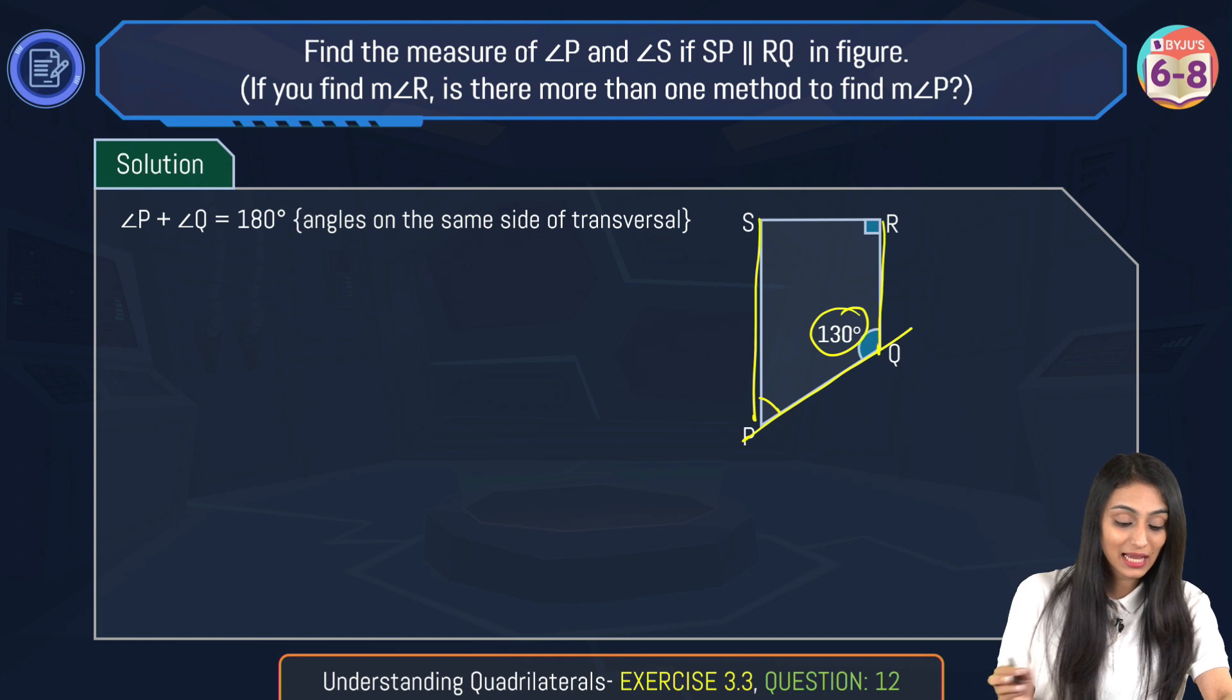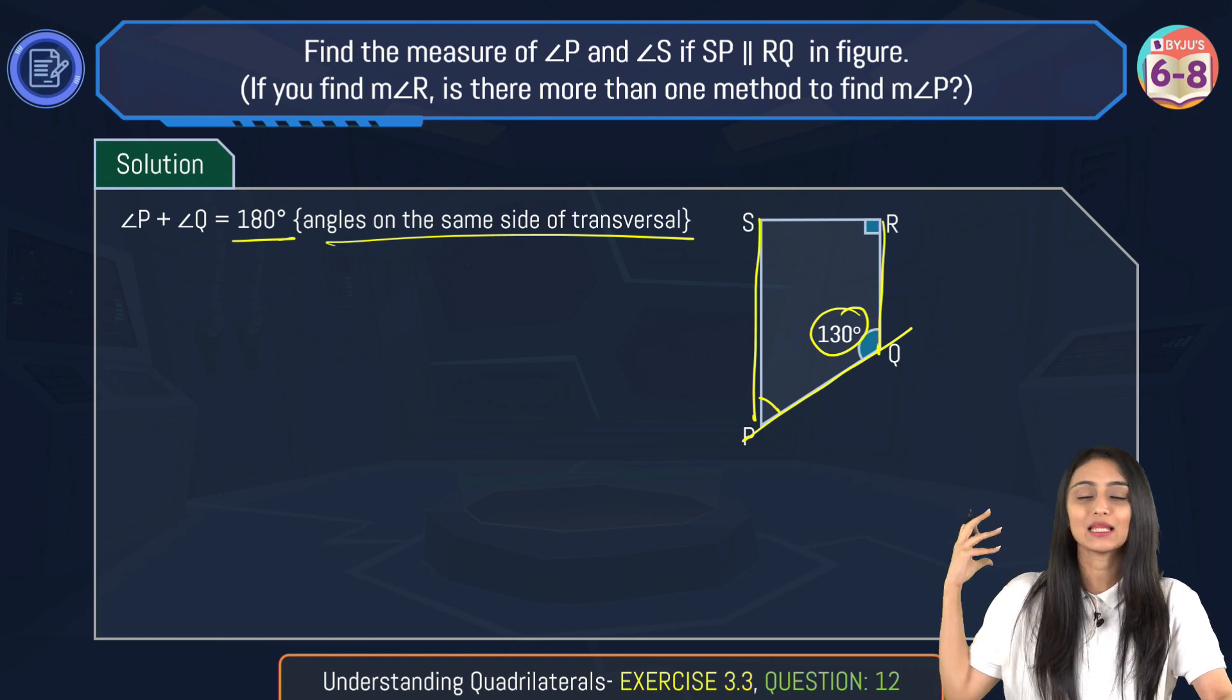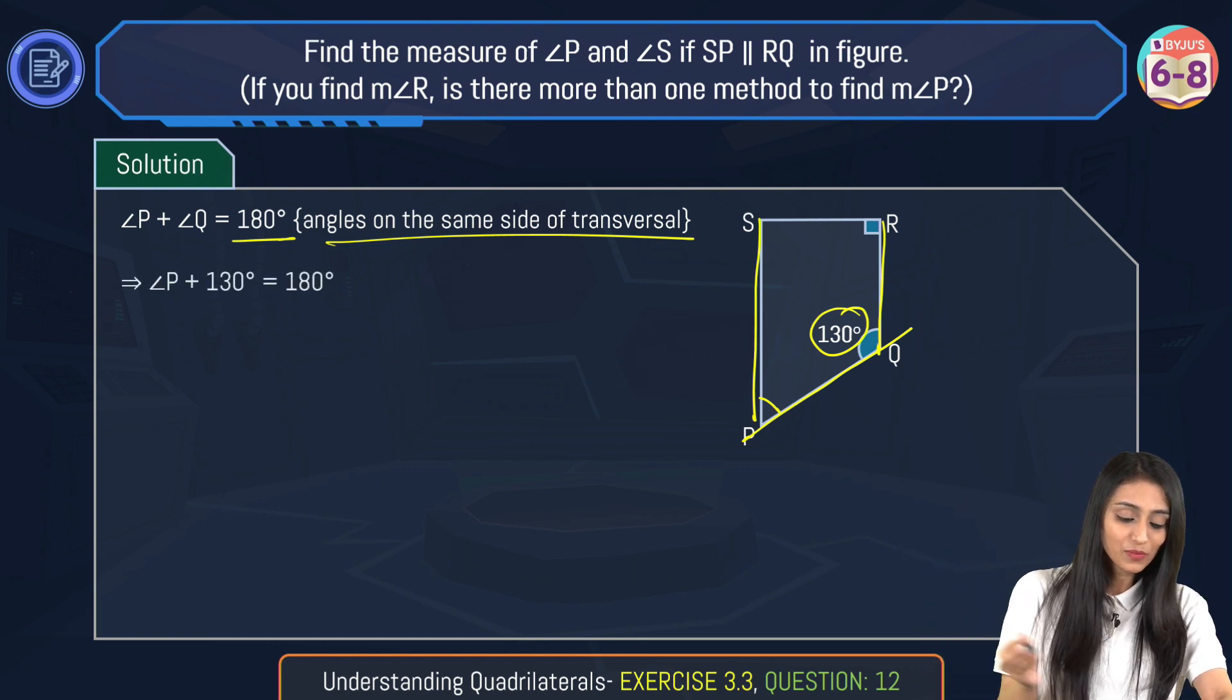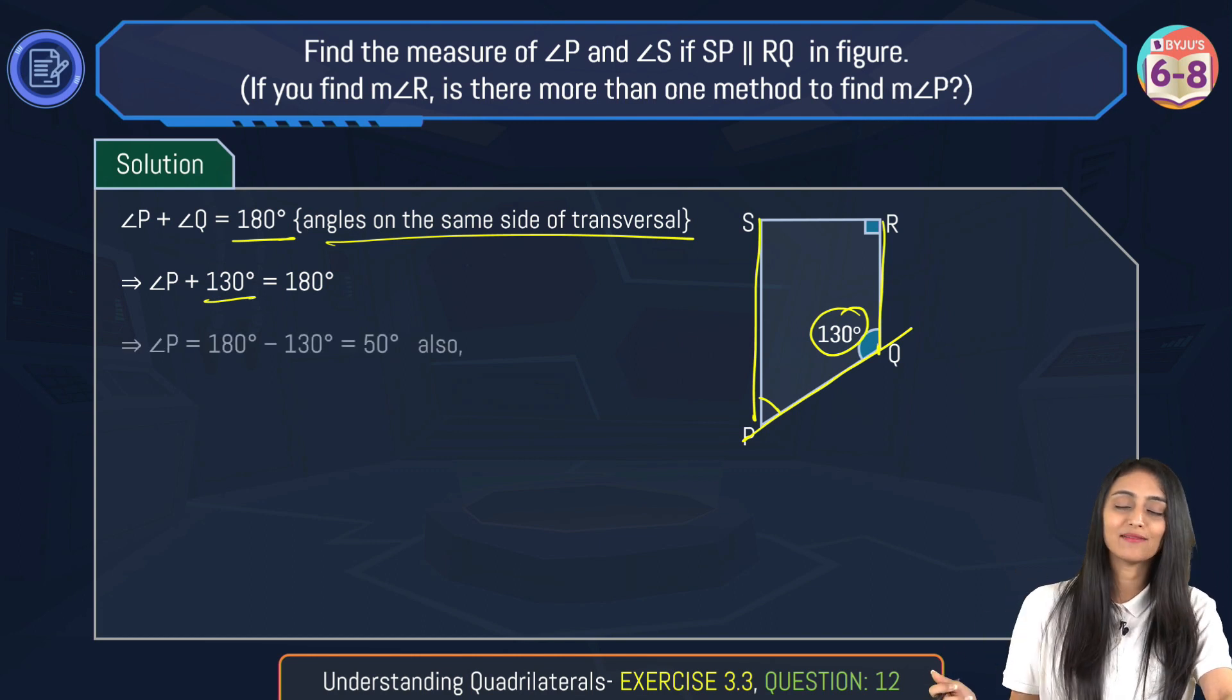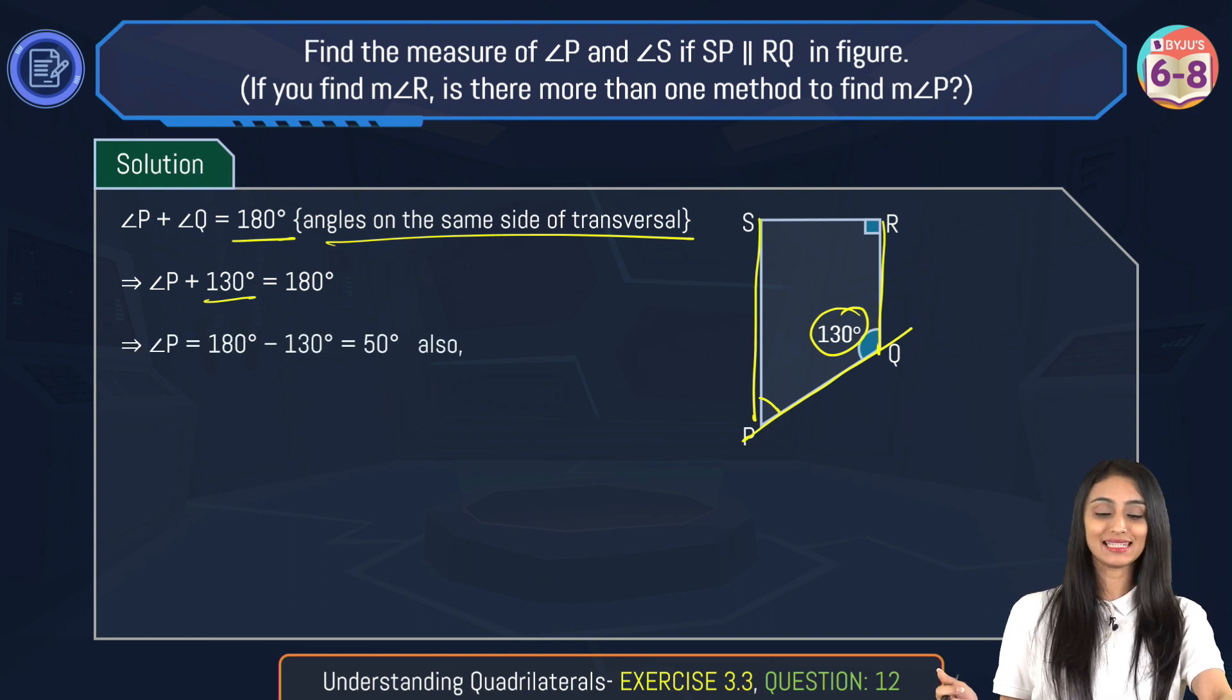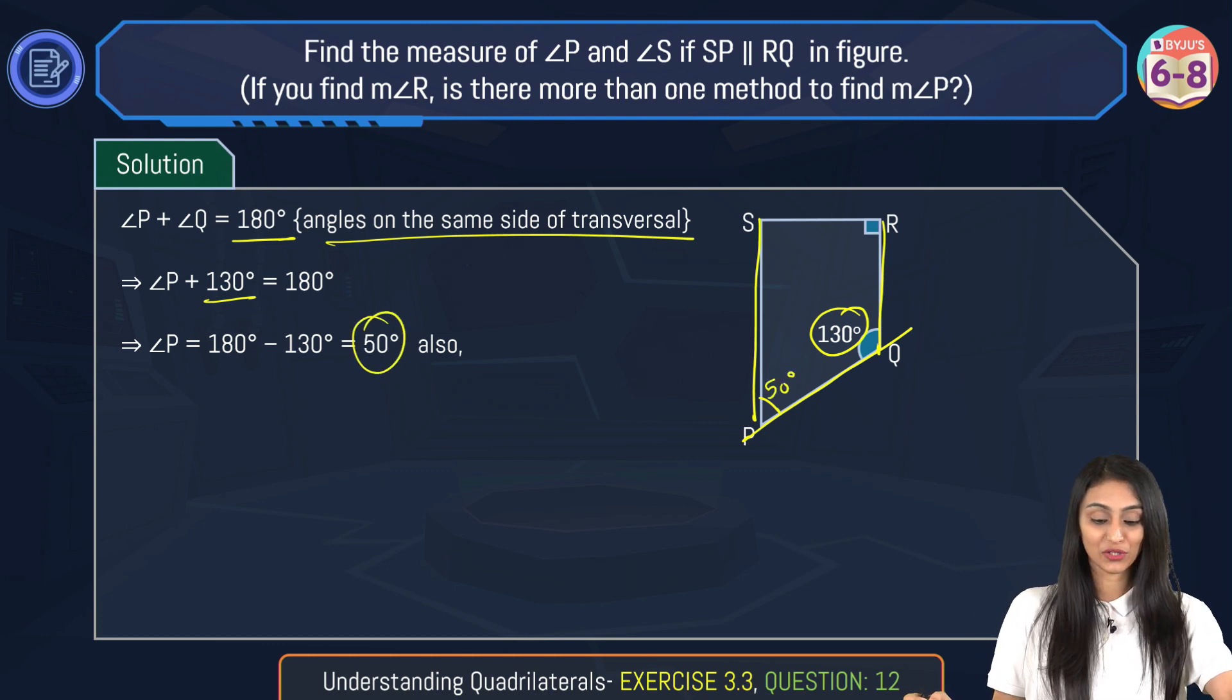So angle P plus angle Q equals 180 degrees, angles on the same side of transversal. Whenever it comes to geometry, we always have to mention the reason in the bracket. So angle Q is 130 degrees. From here we can get the value of angle P, that's 180 degrees minus 130 degrees, which is 50 degrees.